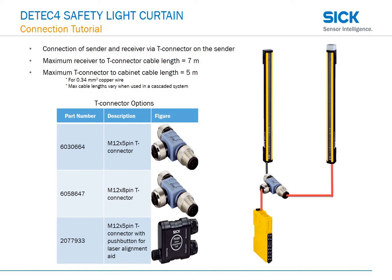The second scenario is the connection of a sender and receiver via T-connector, where the T-connector is on the sender side. Maximum receiver to T-connector cable length will be 7 meters, while the maximum T-connector to cabinet cable length is 5 meters. As you can see in the table below, I am displaying our T-connector options, as well as the M12 5-pin T-connector with push button for laser alignment.